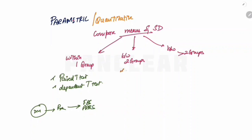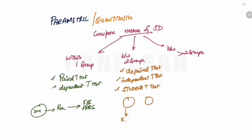Between two groups, we use the unpaired t-test, also called the independent t-test or student t-test. For example, there are two groups: group A given drug A and group B given drug B. After giving the drug, we test the response. To compare between these two groups, we use the unpaired t-test.